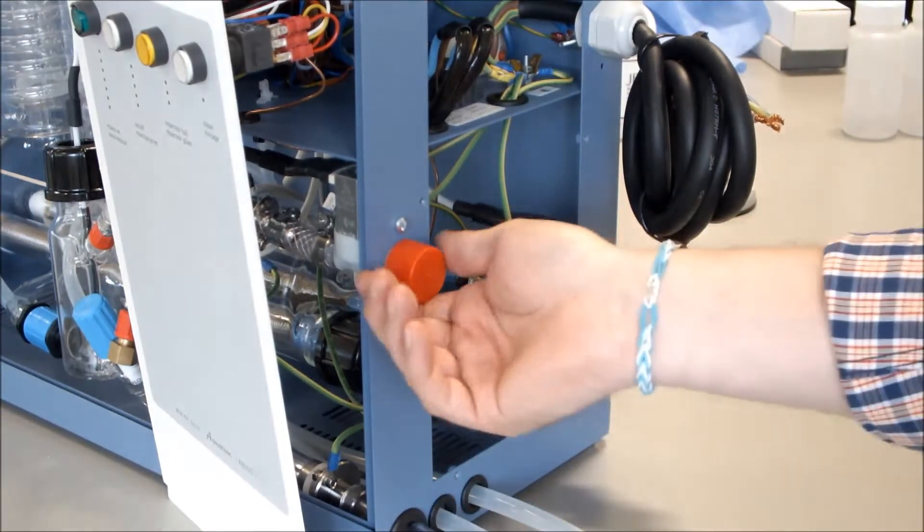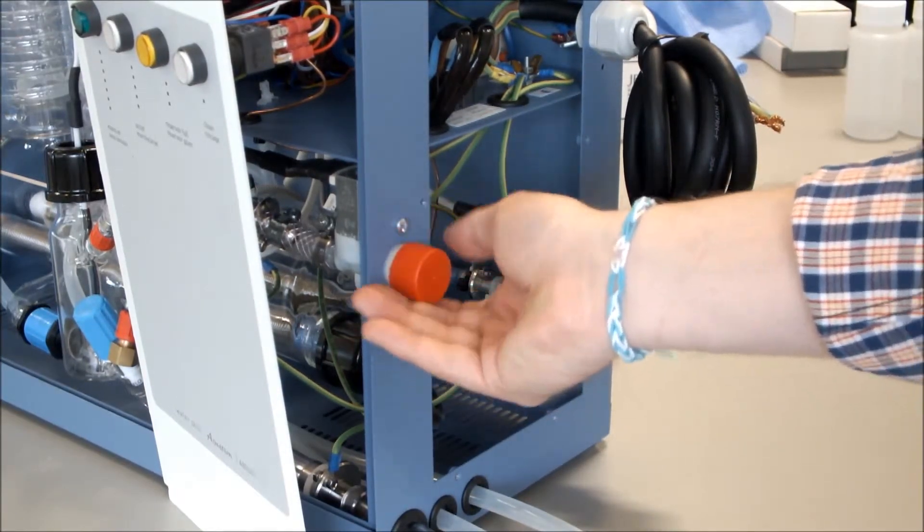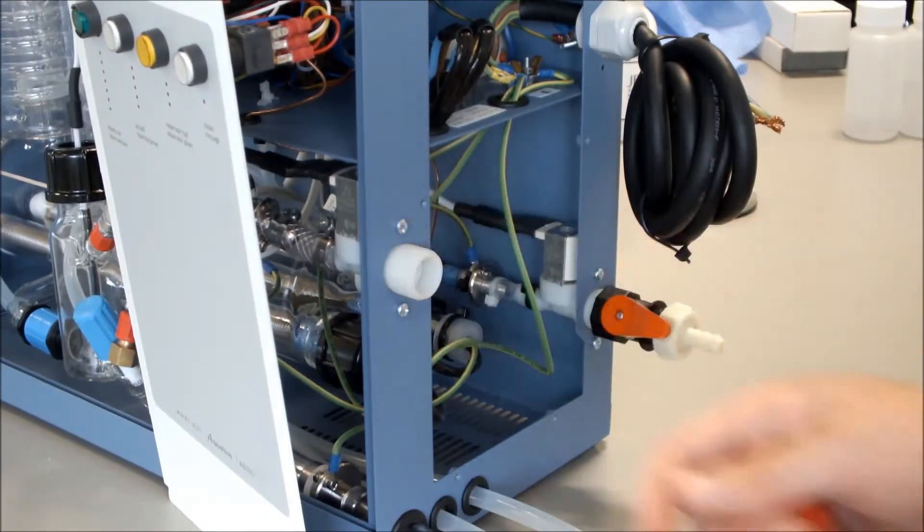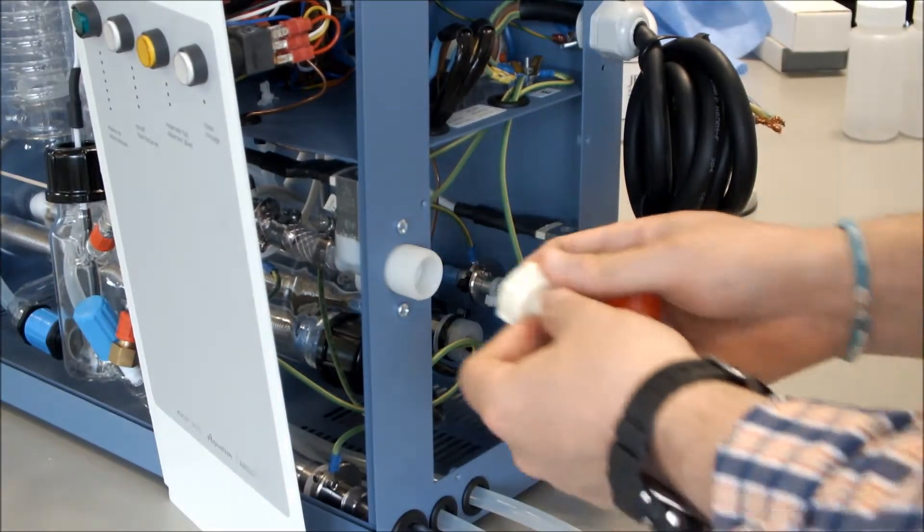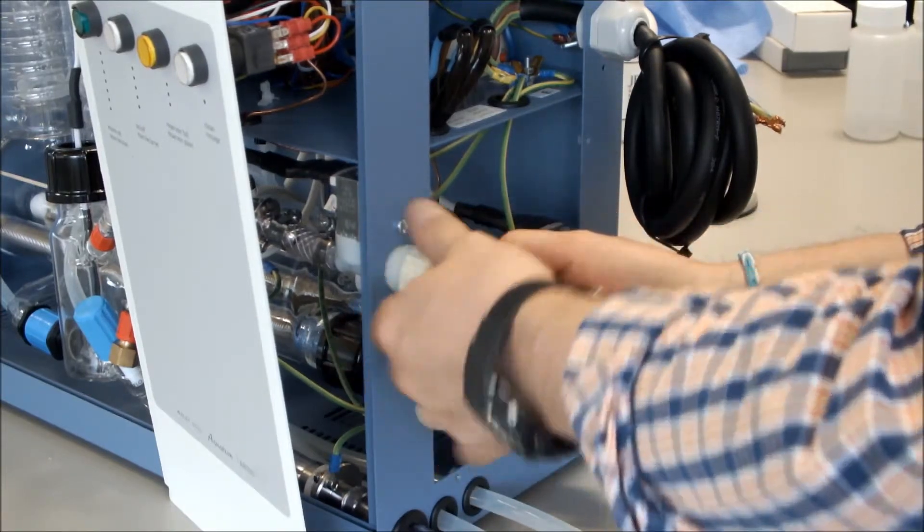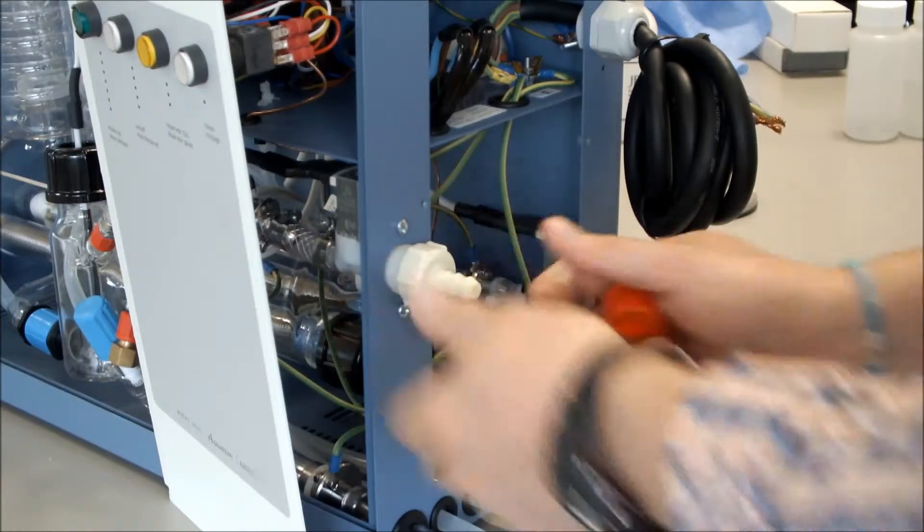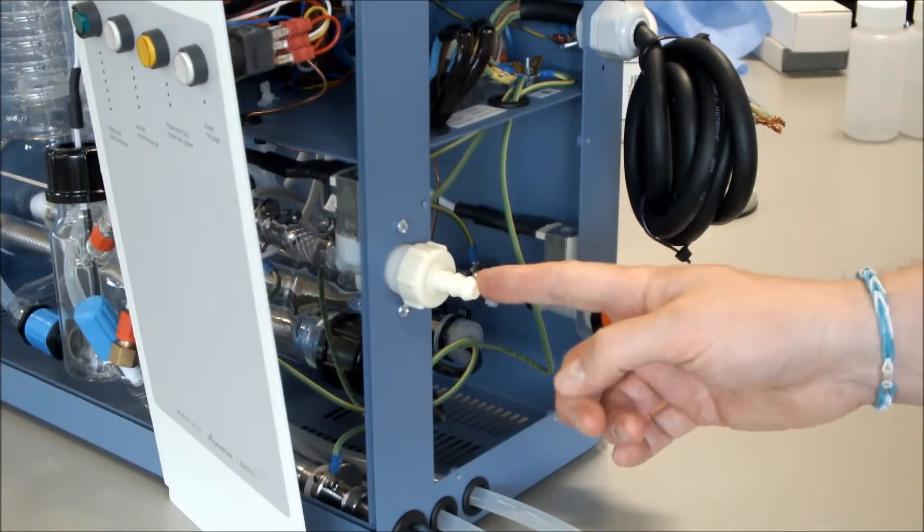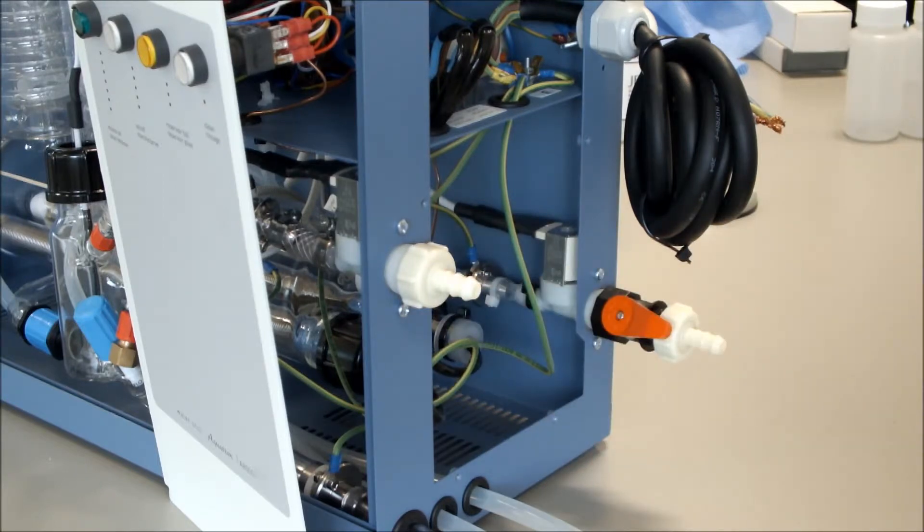We then remove our dummy cap from our deionised or pre-treated water inlet, and we can place our straight connector on there, like so. You can then connect to that with suitable tubing your deionised or pre-treated water.